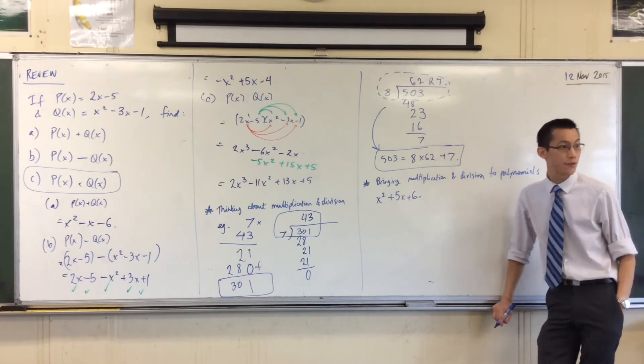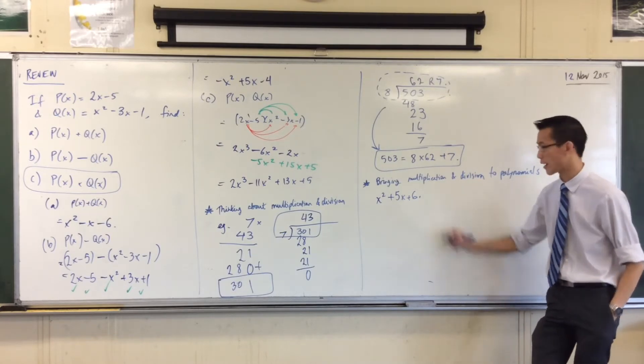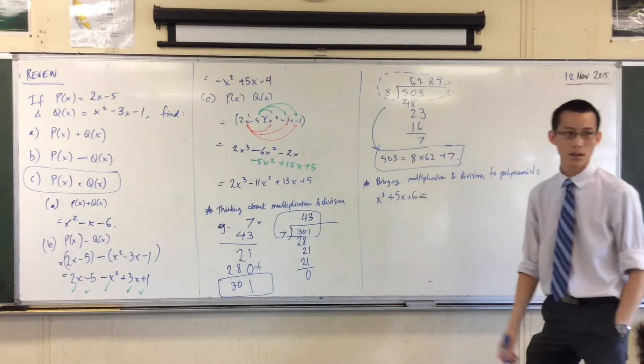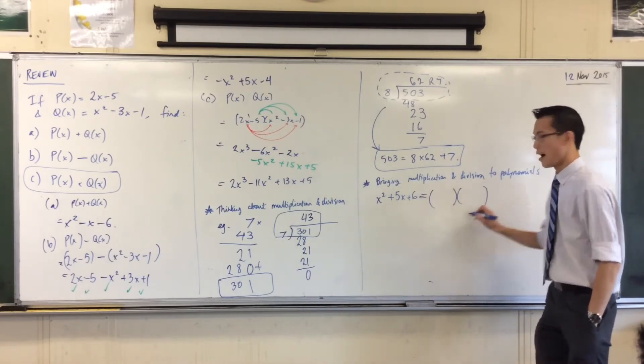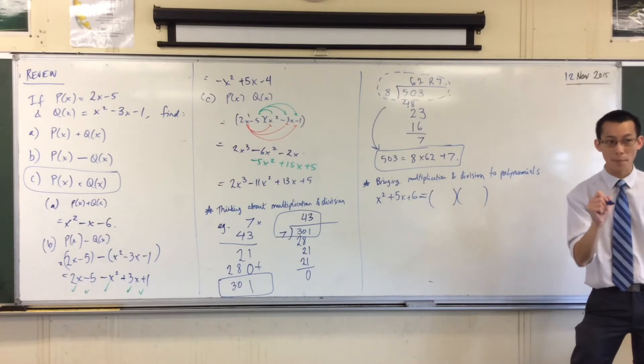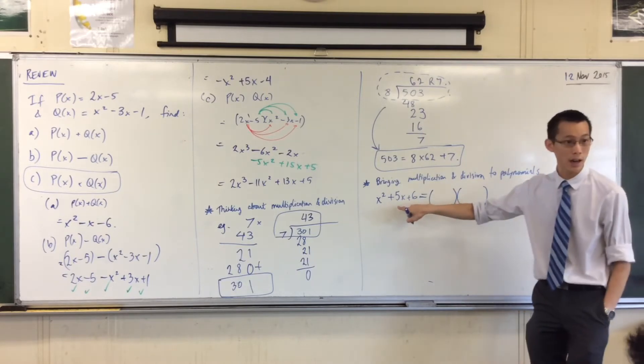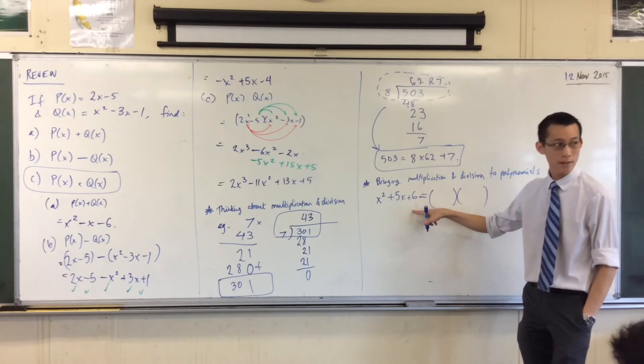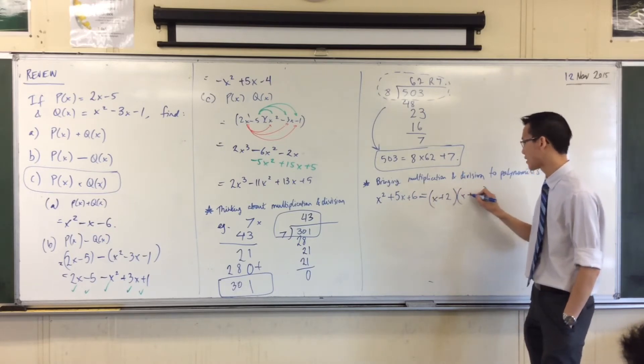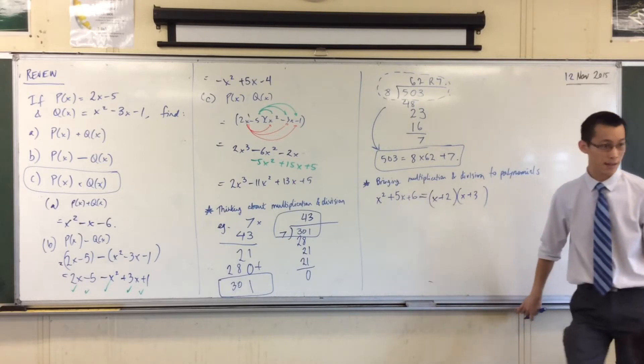Now you guys know how to factorize this. You already know what the factors are. What are the factors of x squared plus 5x plus 6? I think the pair of numbers that are going to work here, which add to 5 and multiply to 6, are 2 and 3. So here are my factors.